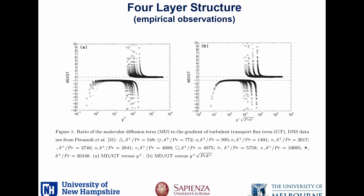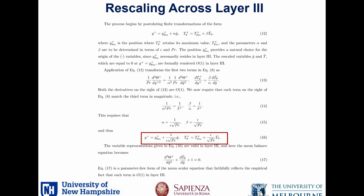What I want to consider now is the analysis across layer three, and see if we can combine the Reynolds number and Prandtl number to get a scaling in that region with a single invariant equation. As before, we pose stretching coefficients alpha and beta — this is a different beta than previously. We plug those into the equation, demand all terms be order one, and solve for beta and alpha. Now you see that it has a combined Reynolds number and Prandtl number dependence. You get the same coordinates centered about layer three, and plugging these stretched coordinates in, you get the same invariant equation where all terms are of leading order across layer three. So now we've got an analytical expression in accord with the empirical observations.